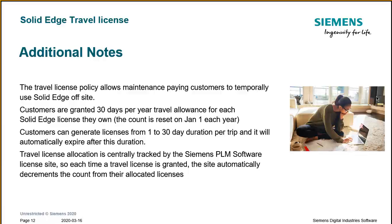Some additional notes on travel licenses: the travel license policy allows maintenance-paying customers to temporarily use Solid Edge off-site, whether you're traveling or working at home. Customers are typically granted 30 days per year travel allowance for each Solid Edge license they own, and the count resets on January 1st of each calendar year. Customers can generate licenses from 1 to 30 days duration per trip, and the license will automatically expire after that duration. These travel licenses are tracked by the Siemens PLM Software license site, so each time a license is granted, the site automatically decrements the count from the allocated licenses.